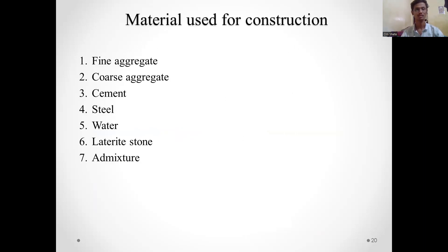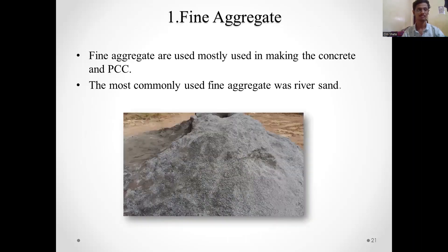Various materials used during construction include fine aggregate, coarse aggregate, cement, steel, water, laterite stone, and admixture. Fine aggregate is used mostly for making concrete and PCC. The main source of fine aggregate is river sand, and manufactured sand is also now available.